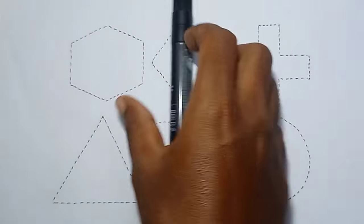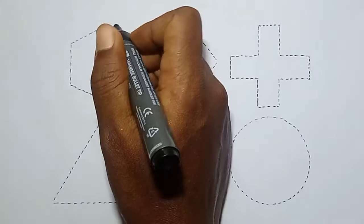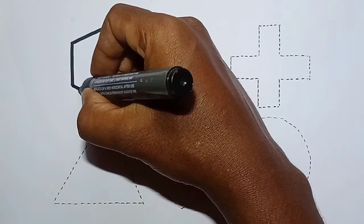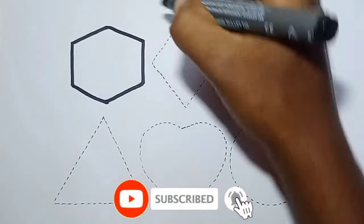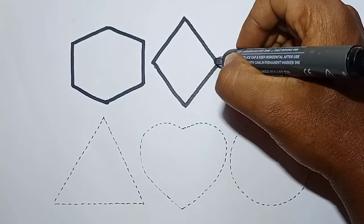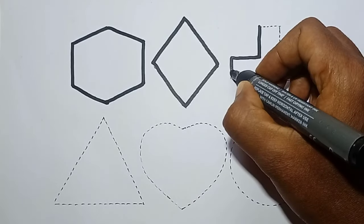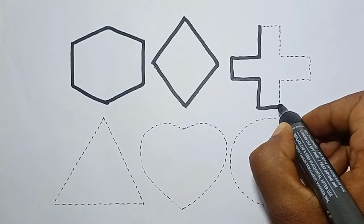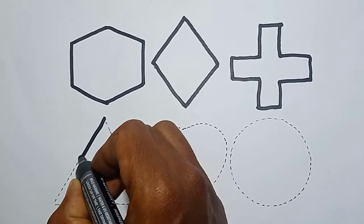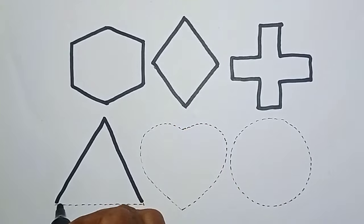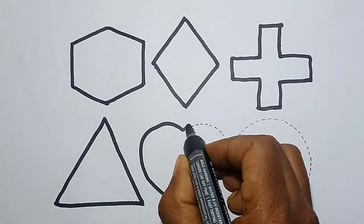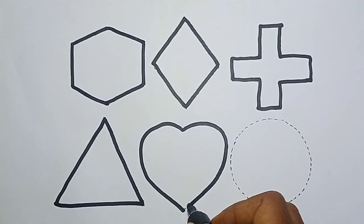This is a black marker. Which color, kids? Black color. Let's draw 2D shapes: hexagon, rhombus, plus, triangle, heart, and circle.